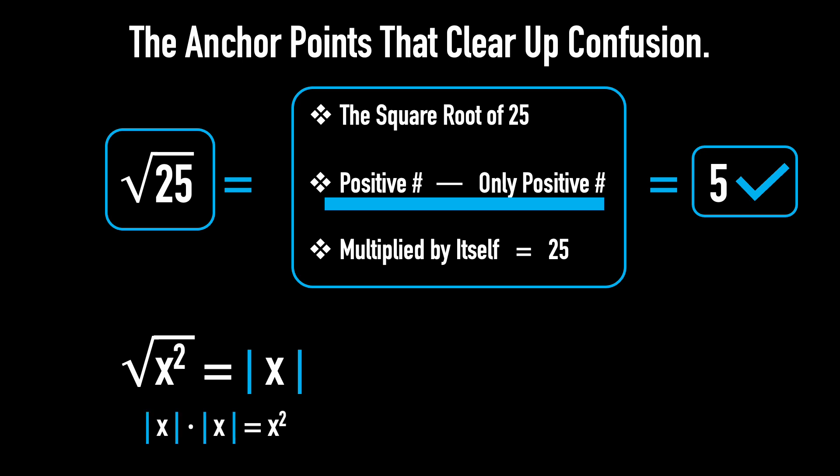For example, if x equals 5, the square root of 5 squared is 5. If x equals negative 5, the square root of negative 5 squared is the absolute value of negative 5, which is 5.